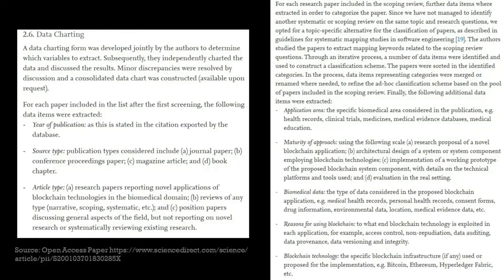Here they are extracting some basic information such as year of the publication, type of the paper, type of the article — like research papers, reviews, position papers and so on. In our case it will only be primary studies, because most of us are most likely not using a review article. Then for each research paper they are looking at five items that they want to extract.